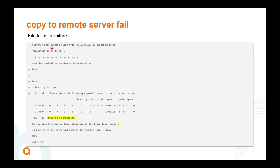If you have a file transfer failure, here is what it looks like. You kick off 'copy support files TFTP [server ID] [target file ID],' collection proceeds, and it attempts to copy across the network — but it hits an error: 'network is unreachable.' It then presents the option: do you want to preserve this collection in the local file — yes or no?